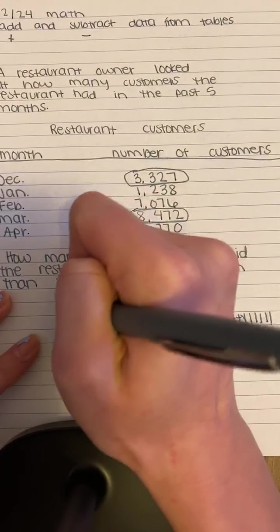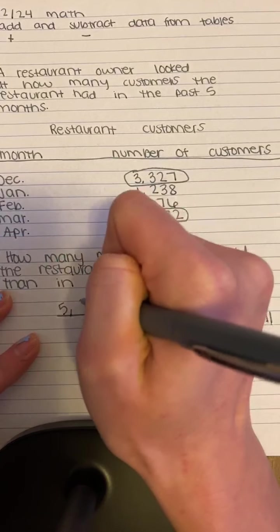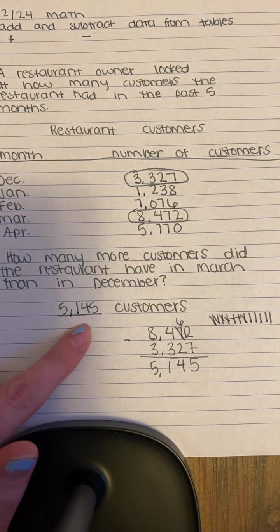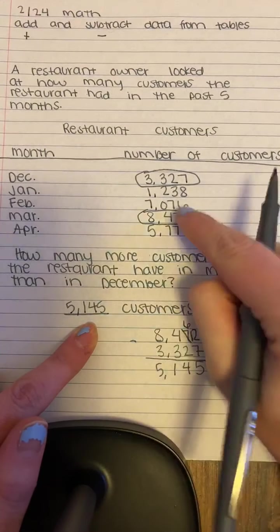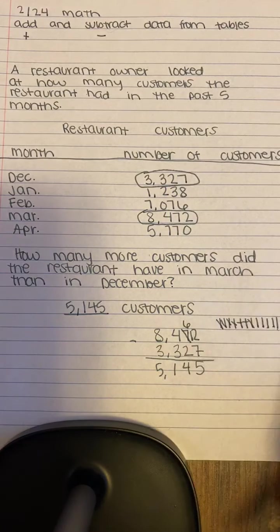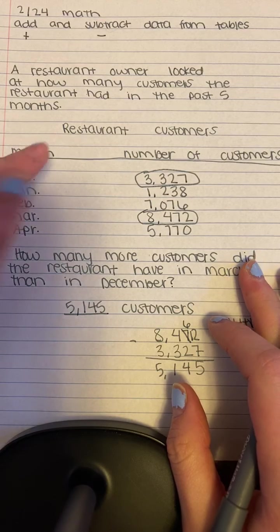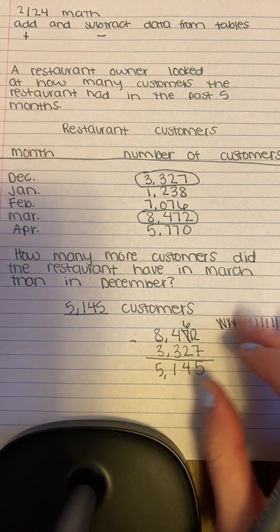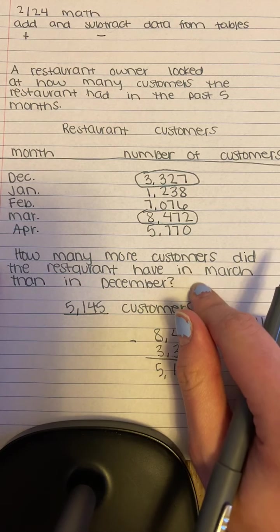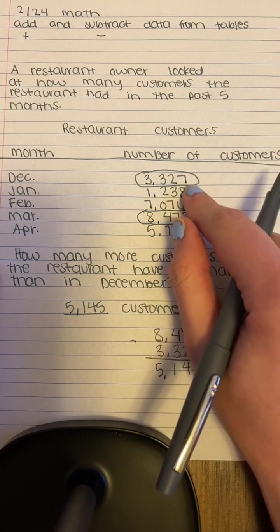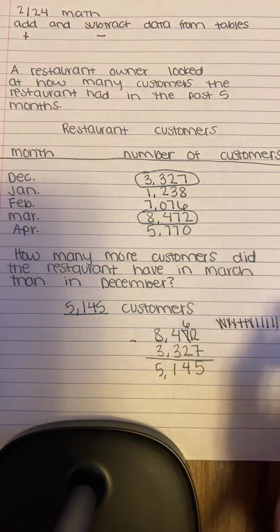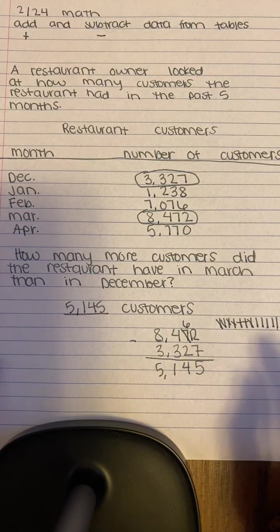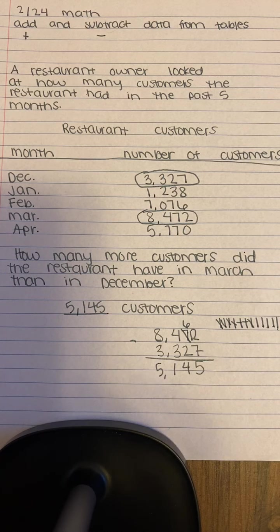So there are 5,145 more customers — 5,145 customers came more in March than in December. Make sure to take your time. Remember, when problems ask for the total or 'in all,' we use addition. But when they ask for the difference — like how many more customers did the restaurant have in March than December — we use subtraction. Make sure to have a piece of paper so you can write out your problems. Have a great day, and I'll see you tomorrow. Bye, third grade!